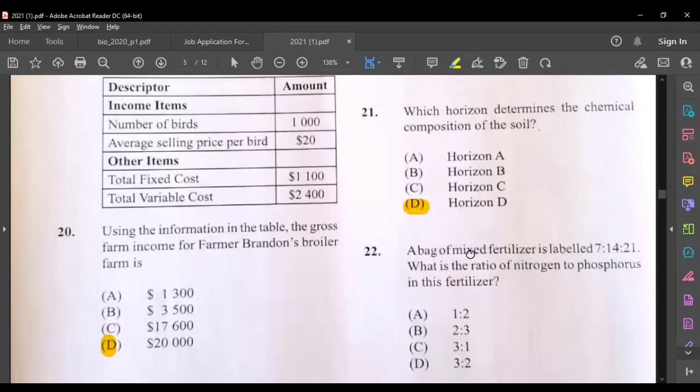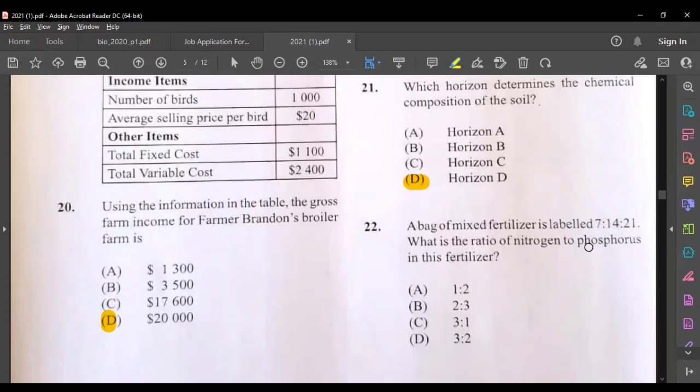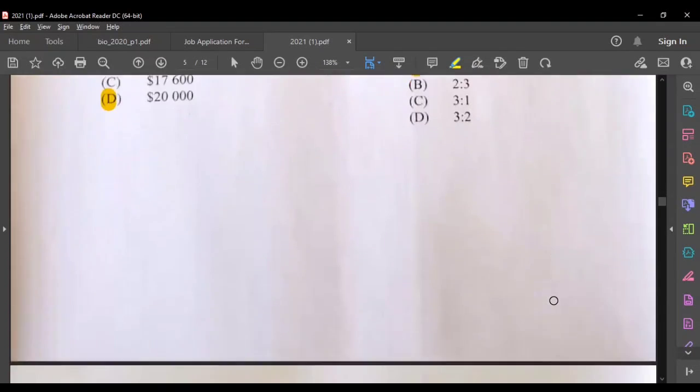A bag of mixed fertilizers labeled 7, 14, 21. What is the ratio of nitrogen to phosphorus in this fertilizer? The first number is referring to nitrogen, 14 is referring to phosphorus, and 21 is referring to potassium. So the nitrogen to phosphorus is 7 to 14, that's 1 to 2, a ratio of 1 to 2. A would be the answer.